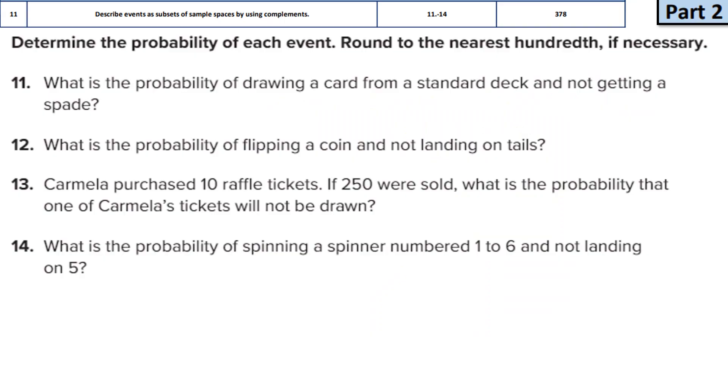Let's look at the questions that we are solving today. All of these four questions from 11 to 14 on page 378 of your math book can be solved using the concept of complements. So let me give you quickly the formula. The formula that we will use to calculate the complement is that the probability of an event not happening is equal to 1 minus probability of an event happening.